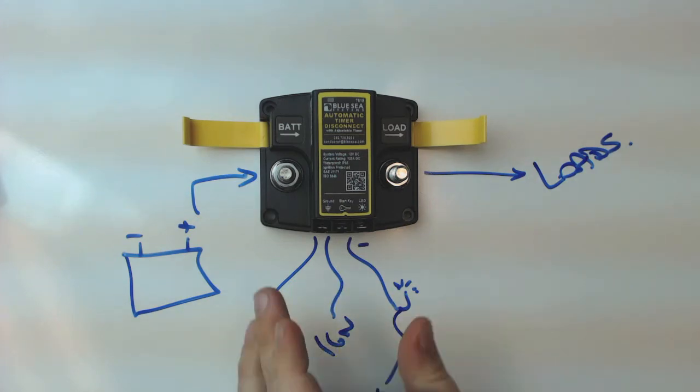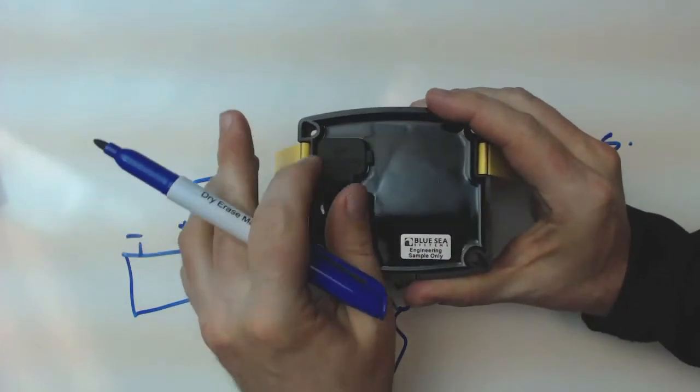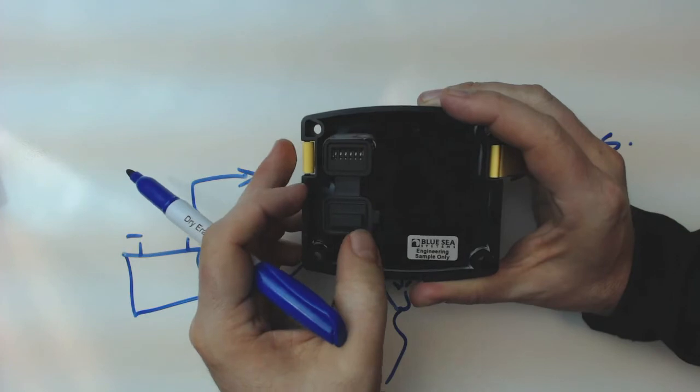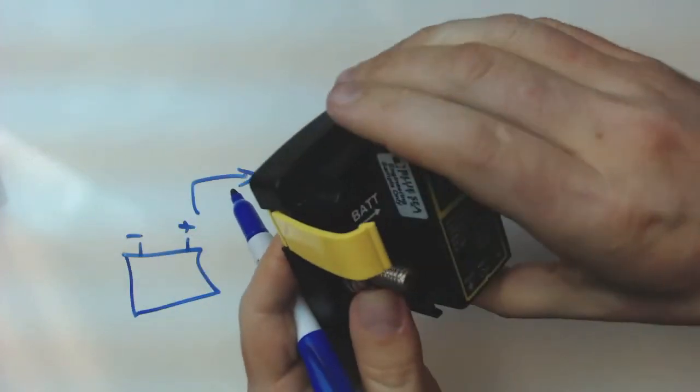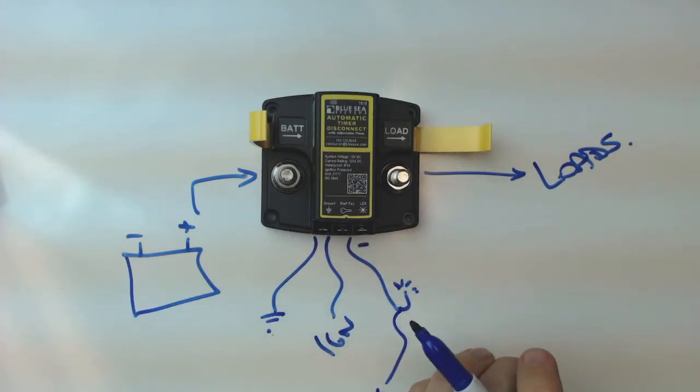So on the back of the timer, there are dip switches in here behind this little waterproof cover. And those dip switches do various things. But what they mostly do is they set the time. So we can set a timer between 15 minutes and four hours in various increments, depending on how you've got the dip switches set.